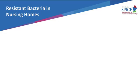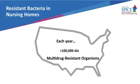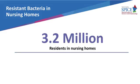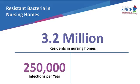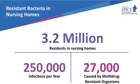Antibiotic-resistant infections kill more Americans than HIV-AIDS, and the number of lives claimed continues to rise. More than 2 million people acquire antibiotic-resistant infections in the U.S. each year, and more than 100,000 die as a result. In nursing homes, the number affected is no less shocking. On average, there are 3.2 million residents currently in nursing homes. Of these, 250,000 acquire infections during their stay. Around 10%, or 27,000, of these infections are caused by multidrug-resistant organisms.